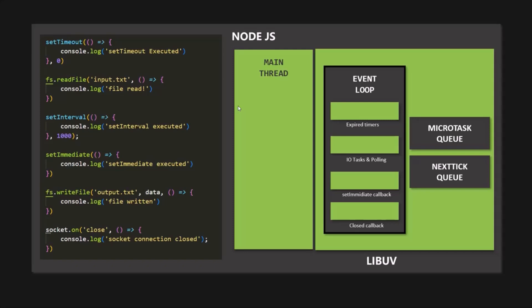After each of the four phases, if there are any callbacks in these two special queues, they will be executed right away once the current phase completes. For example, if a promise resolves and returns data from an API call while the first phase is still running, once the first phase completes, instead of moving on to the second phase, the event loop will first execute the callback from the microtask queue. The promise callback waiting inside the microtask queue will be executed right after the first phase finishes.